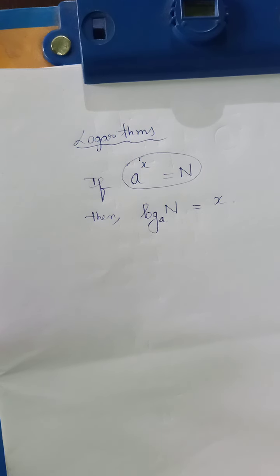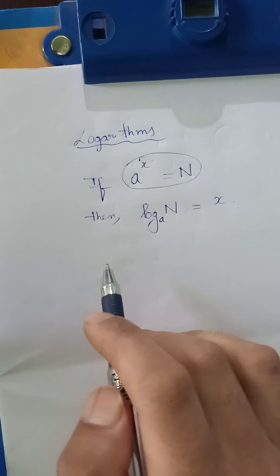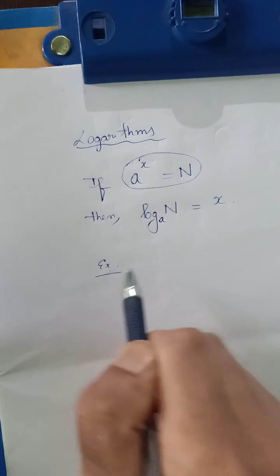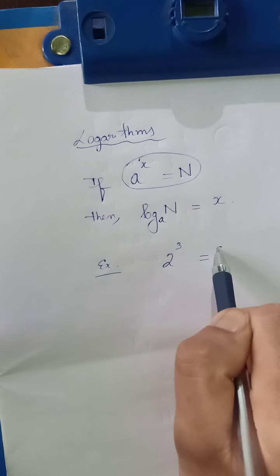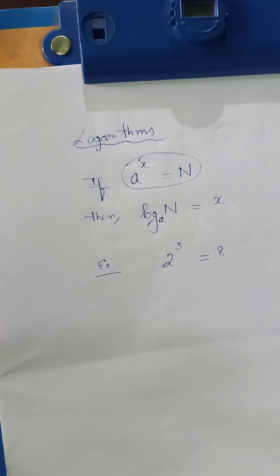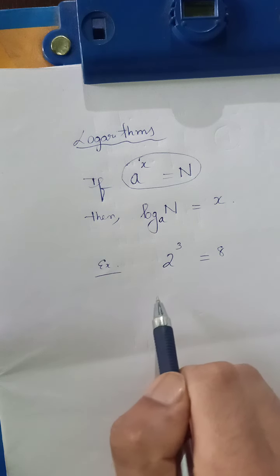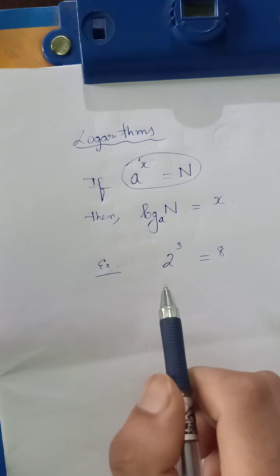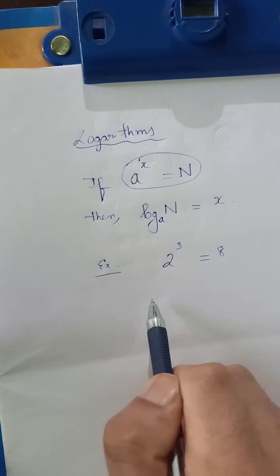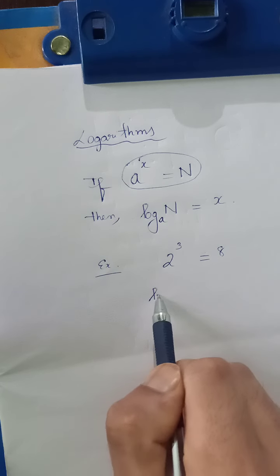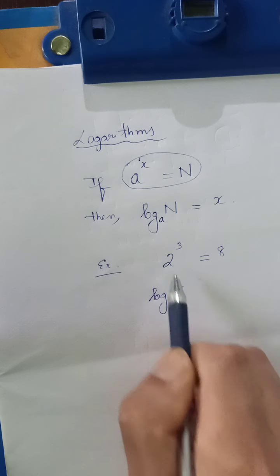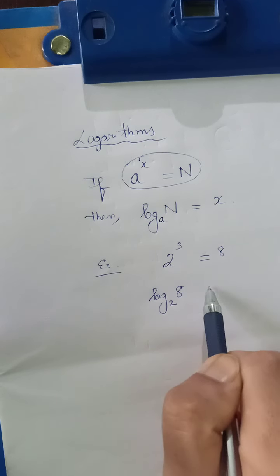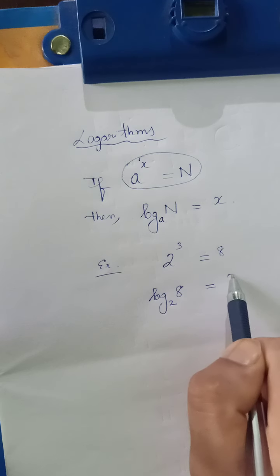Let us see an example to understand this much better. Suppose 2 cubed gives you 8. Now let us write this in logarithmic form. Since 2 cubed is 8, if I write log of 8 with base 2, then it gives you 3.